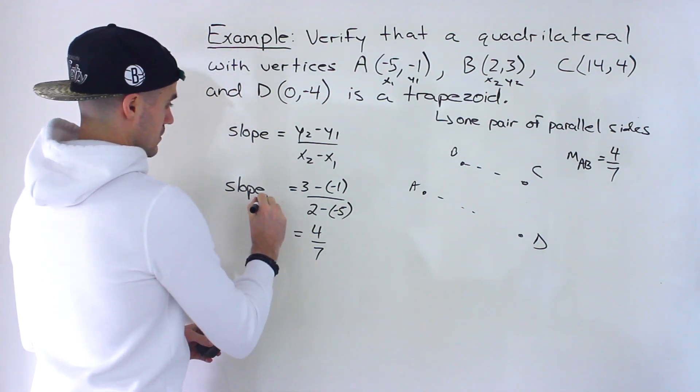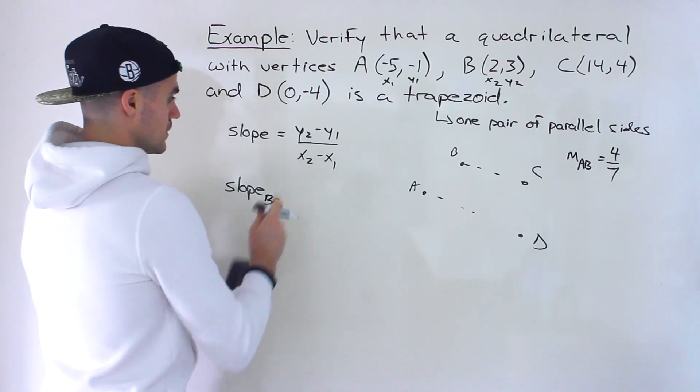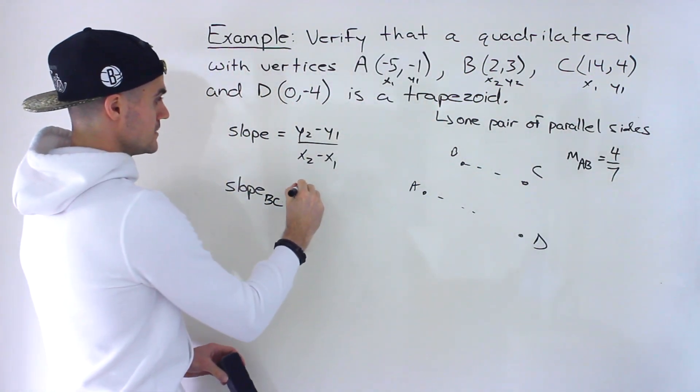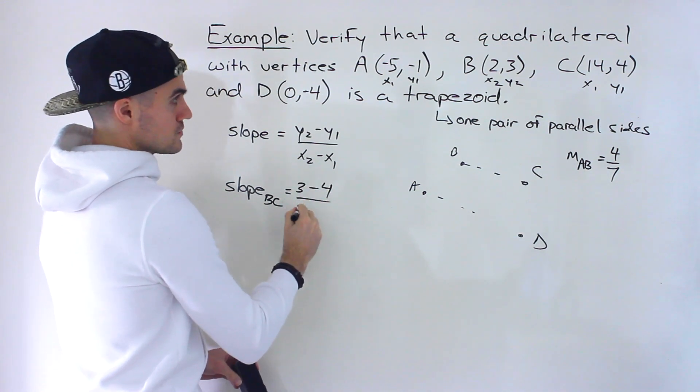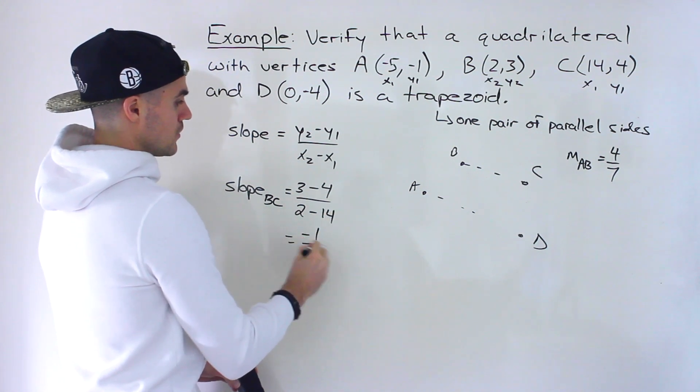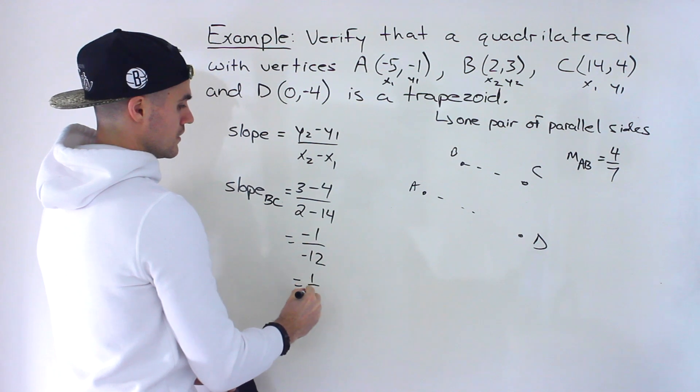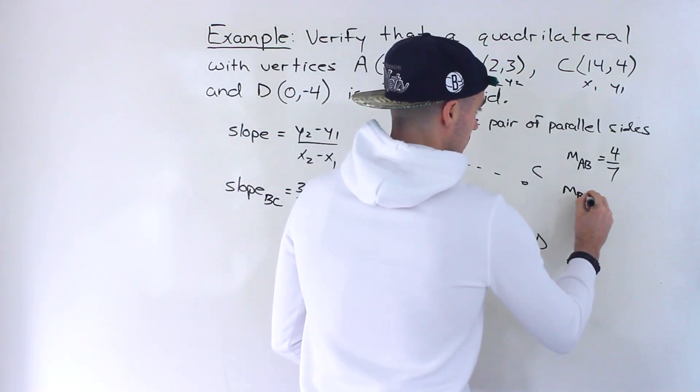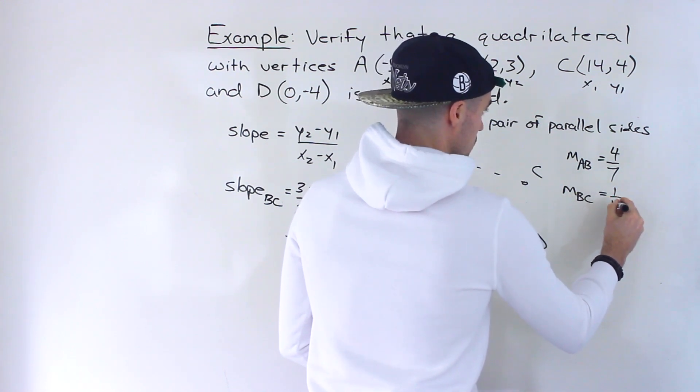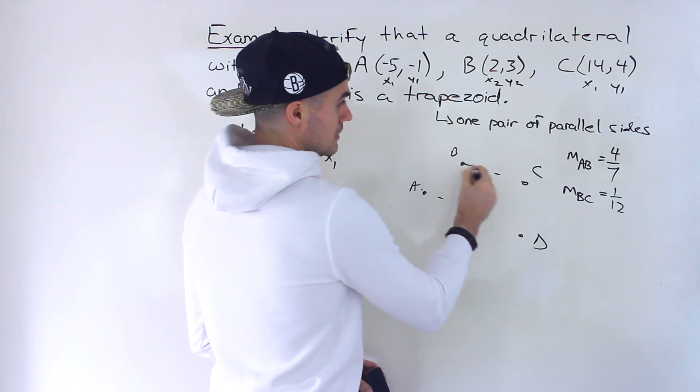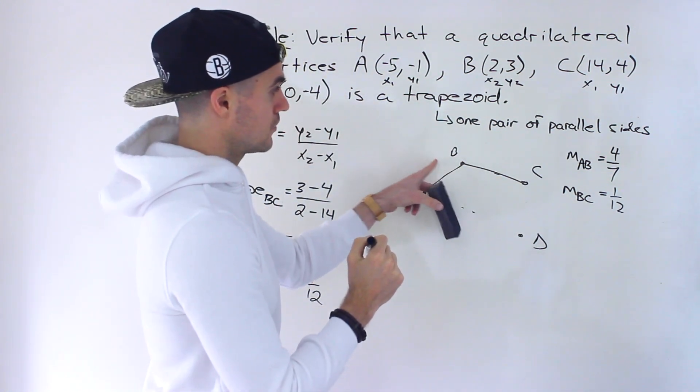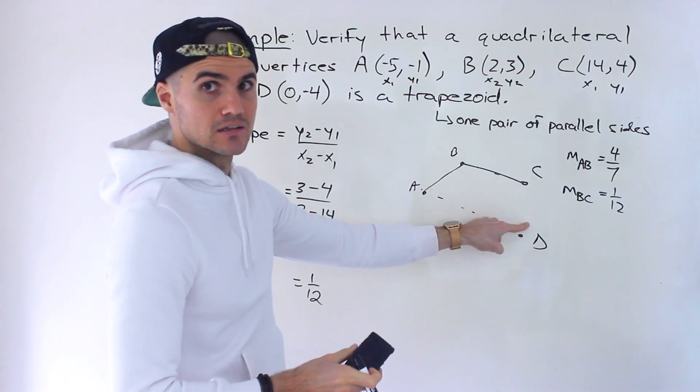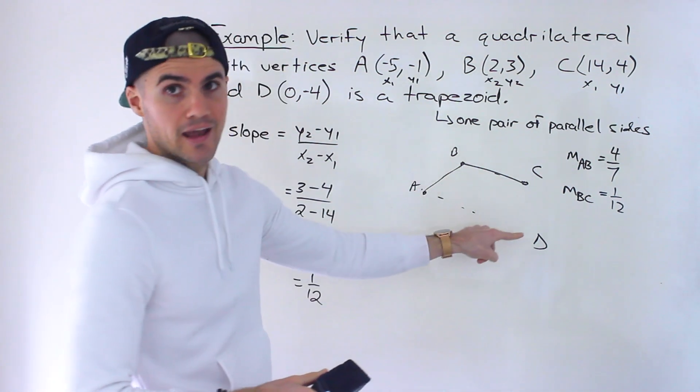Now let's find the slope of BC. So notice that B we already have labeled as x2, y2 so I'll label C as x1, y1. So we would end up with y2, 3 minus 4 over x2, 2 minus x1 which is 14, negative 1 over negative 12 which gives us 1 over 12 like that. So that's the slope of BC. So those are not parallel and that makes sense because they're these two lengths, they're connecting at this B value.